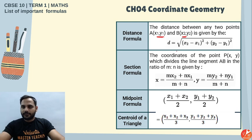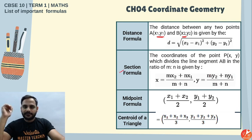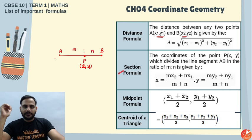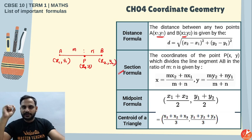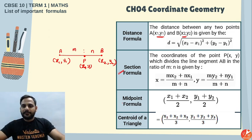Now coordinate geometry. The distance formula between two points (x₁, y₁) and (x₂, y₂) is √[(x₂−x₁)² + (y₂−y₁)²]. The section formula: if a point divides the line joining (x₁, y₁) and (x₂, y₂) in ratio m:n, then x = (m·x₂ + n·x₁)/(m+n) and y = (m·y₂ + n·y₁)/(m+n). Try to draw a diagram — it makes it easier.